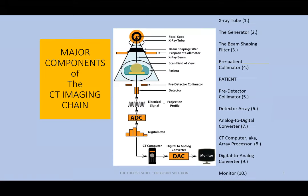Let's jump right into the lecture. I've got 25 slides here, but we'll probably get through about half of them. The reason will become apparent. With regard to the major components of the CT imaging chain, there are approximately 10 major components. They're listed for you there on the right.